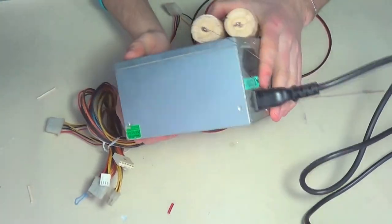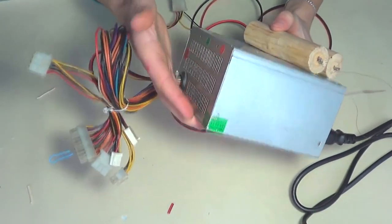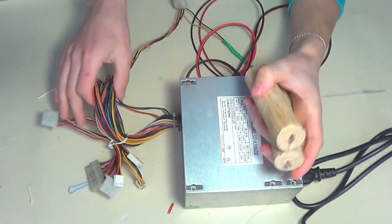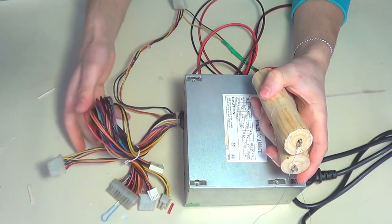That's all, our nichrome cutter is ready. As you see, the box is small and doesn't occupy much space, it may even be portable. If you want, you may remove all the unnecessary wires and set a small switch.